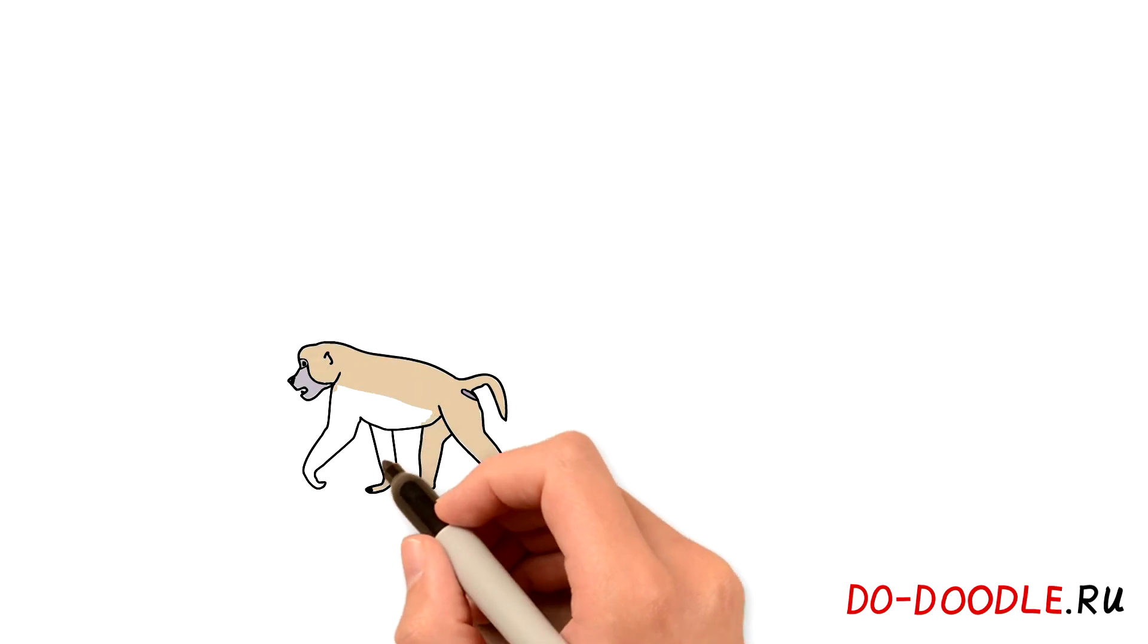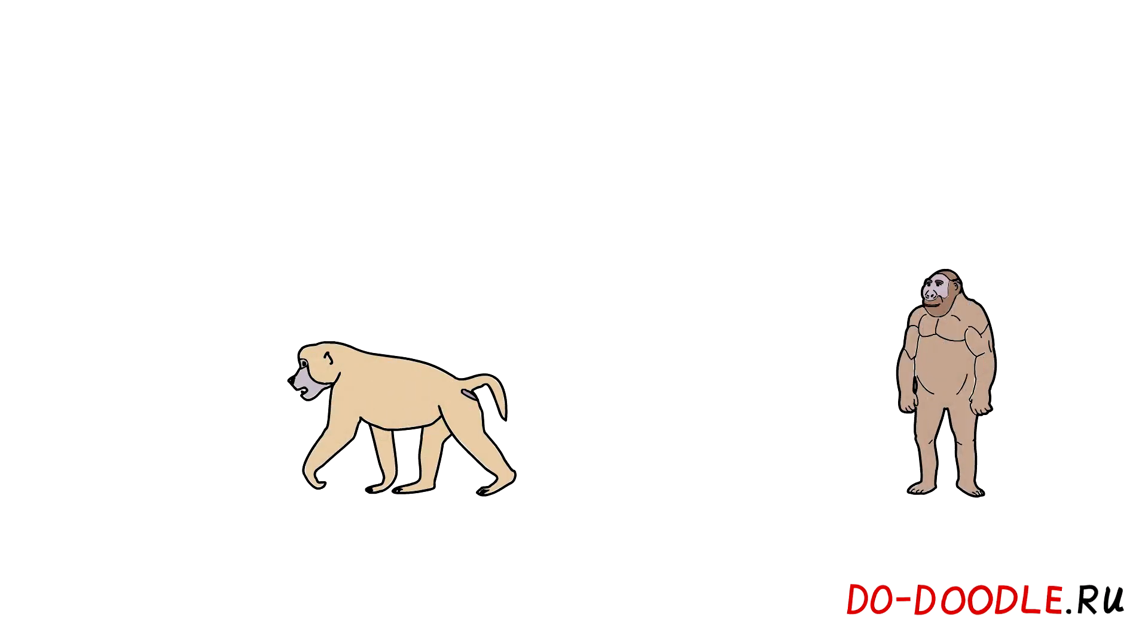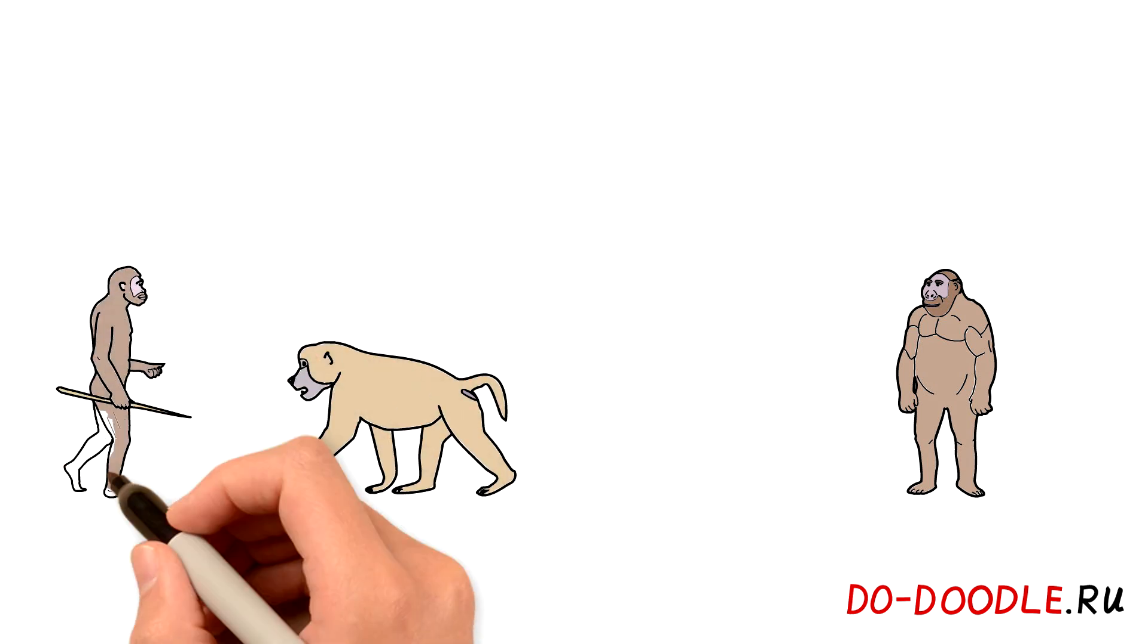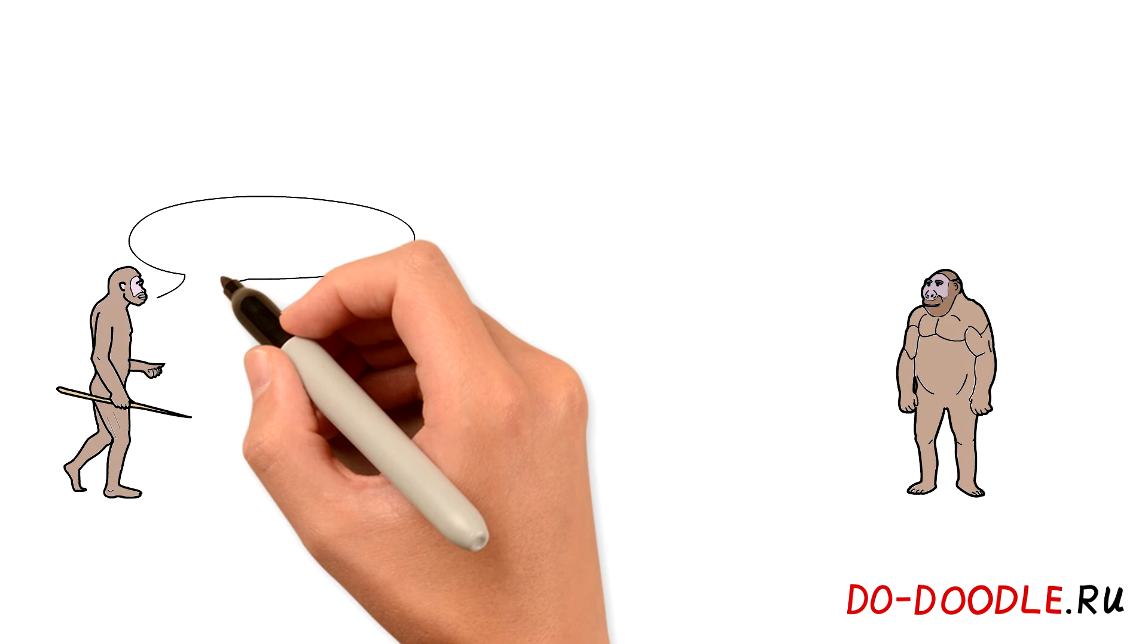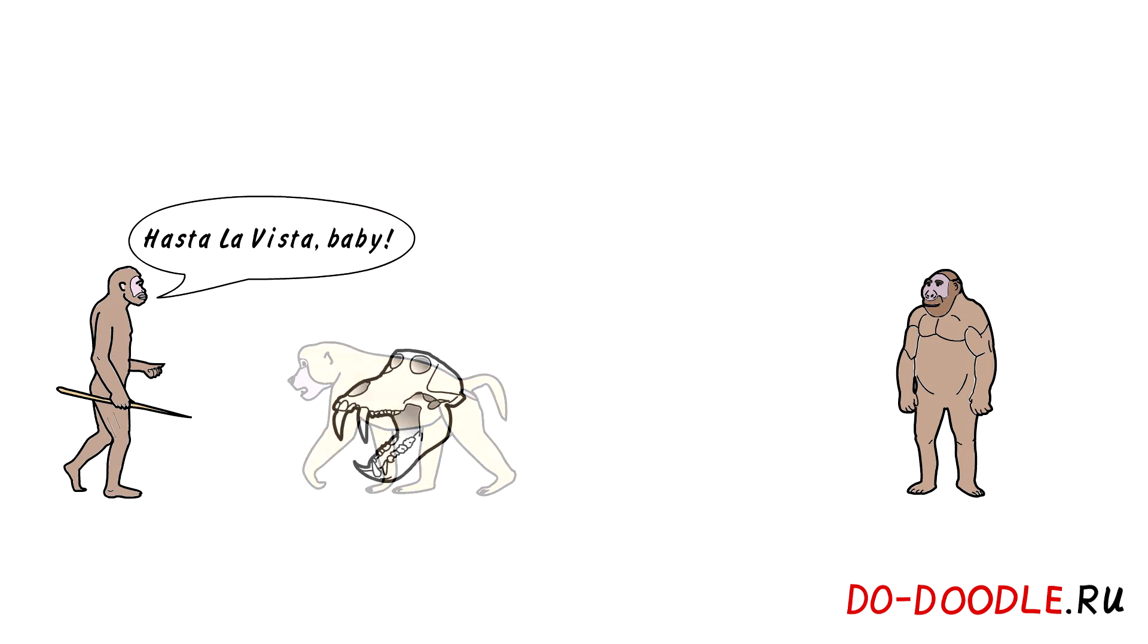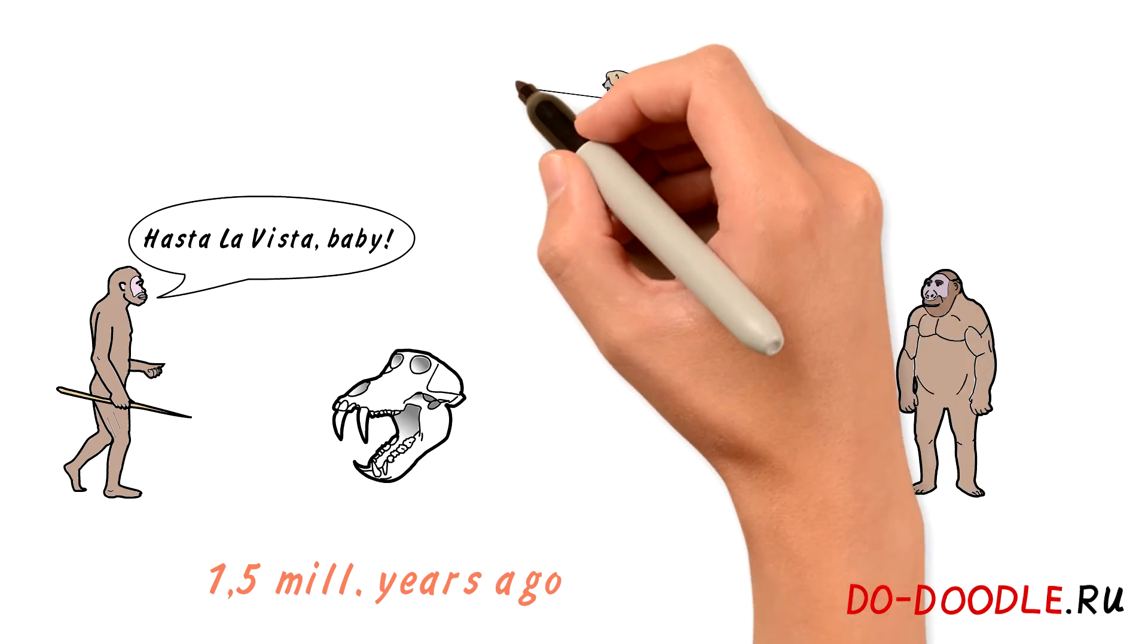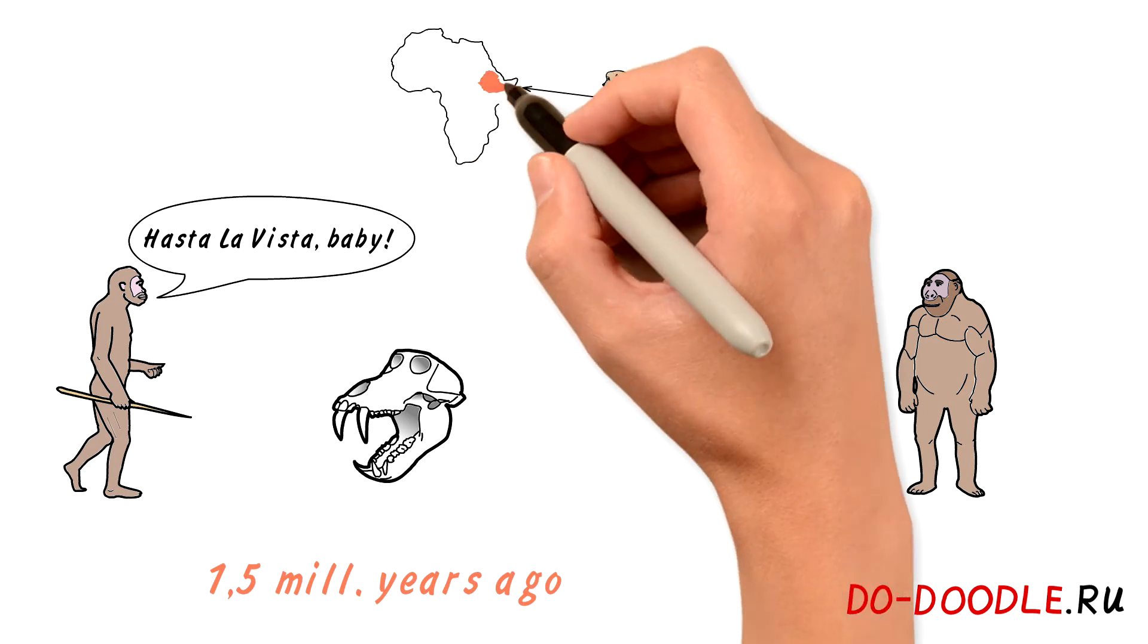And what about those giant geladas and paranthropus? Well, geladas met our ancestors next time when they had already become smart and armed, which led to geladas' extinction approximately one and a half million years ago. Only one small species has survived, hiding in the desolated mountains of Ethiopia.